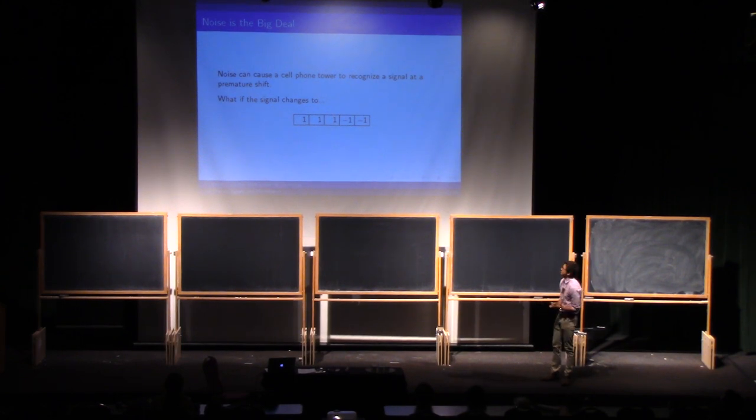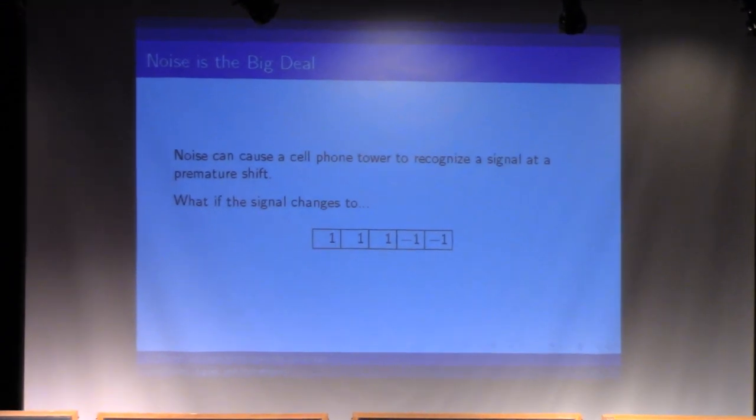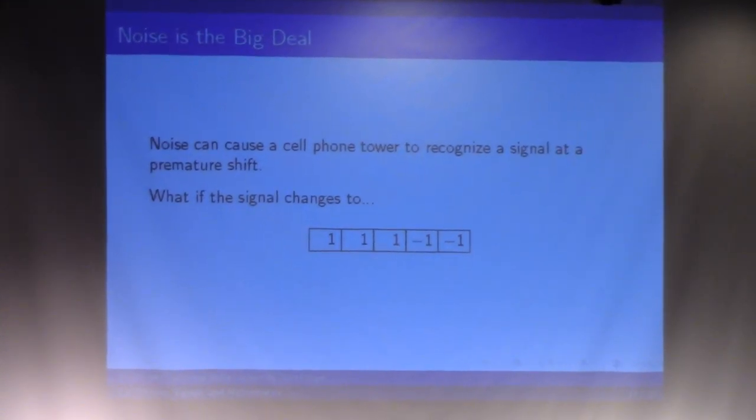Well, noise is going to be the big issue. Noise can cause a cell phone tower to recognize a signal at a premature shift. And here's an example where I'm going to change just one little entry. That middle one used to be a minus one, and now it's going to be a one, and we'll see what happens.